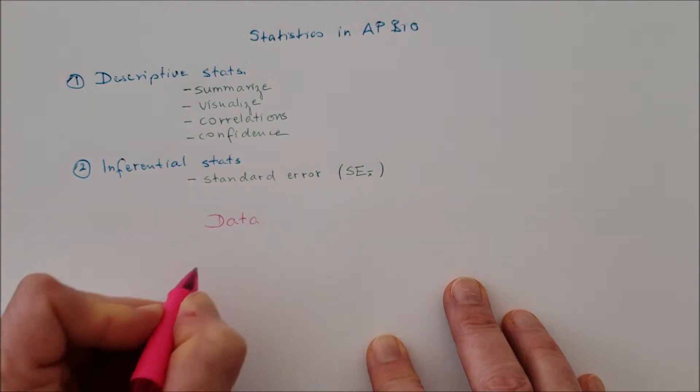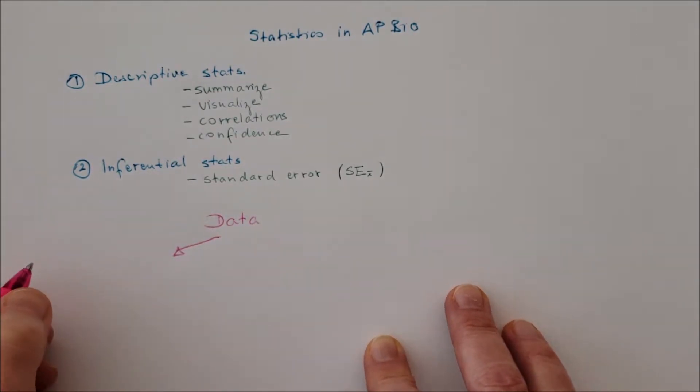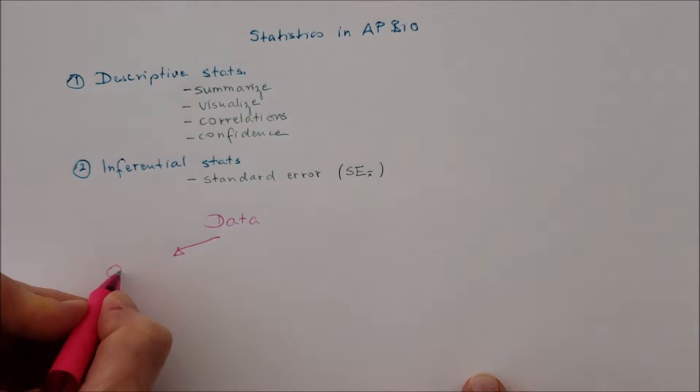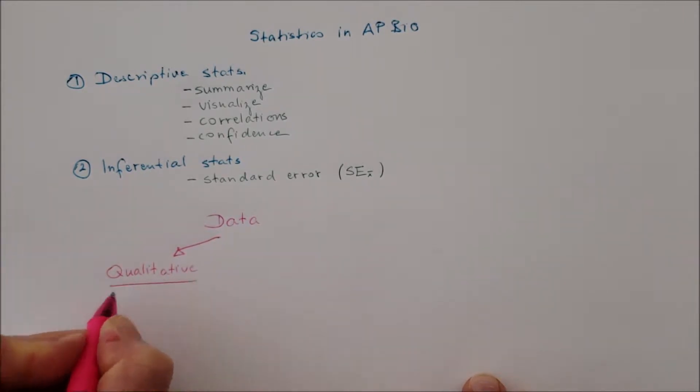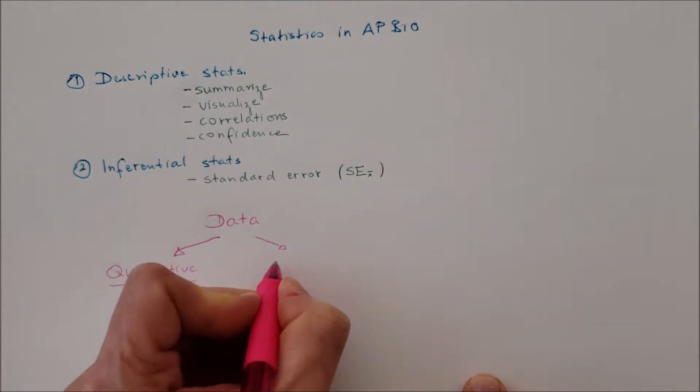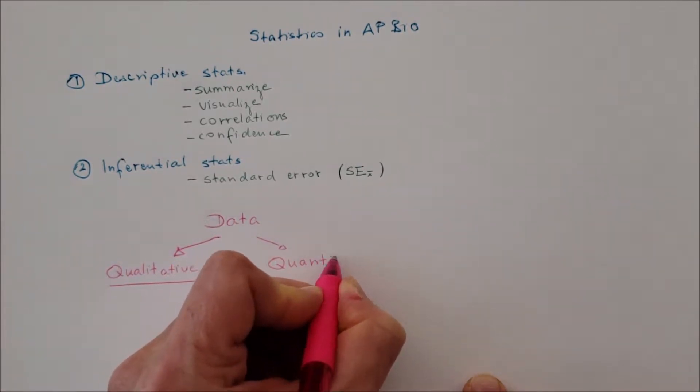Gathering data. The data can be qualitative data, this is the categorical data, and quantitative data.